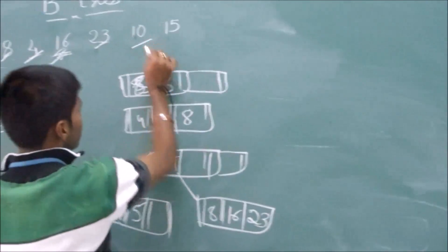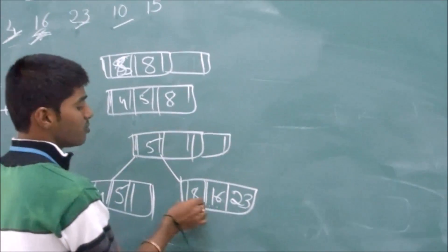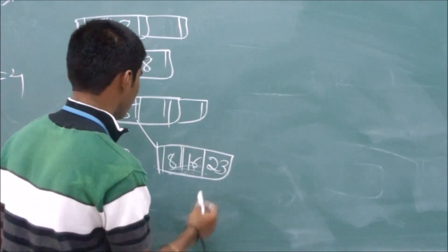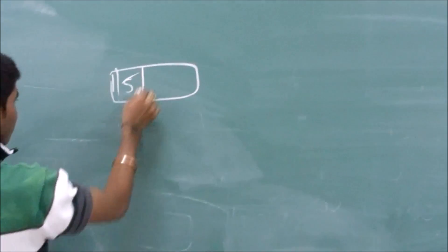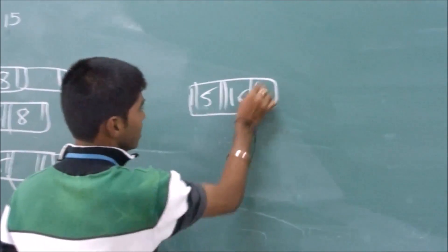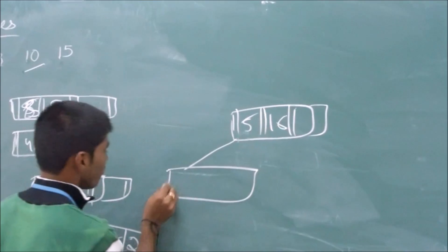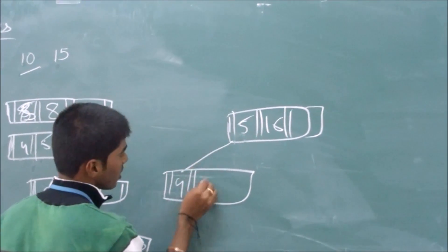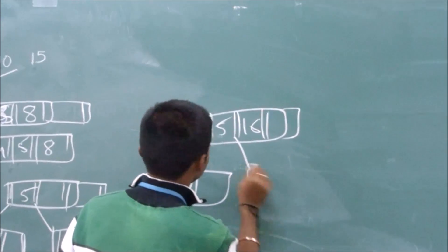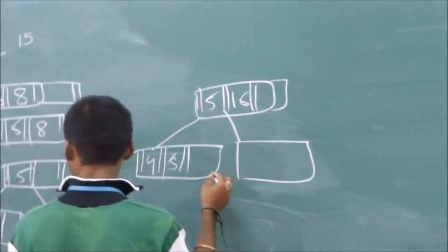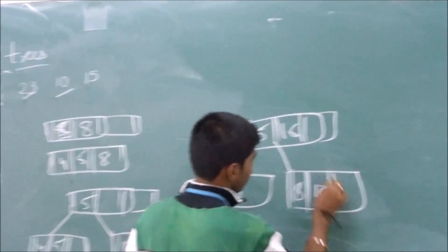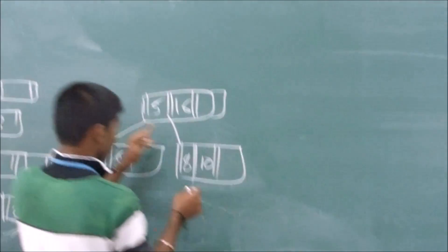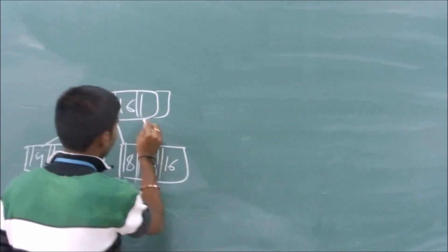Now we have to place 10. There is no space for 10, and it should get placed between 8 and 16. So we divide this particular node. We will have 5 and 16 as the result of the division. To the left of 5 we have 4. To the right of 5 we have 8 and 10. And the node can also have 16, as 16 is greater than 5.